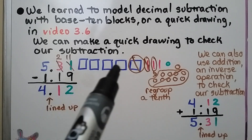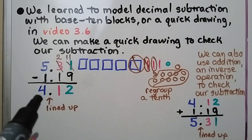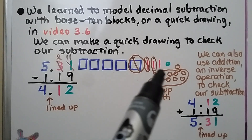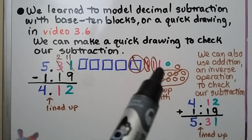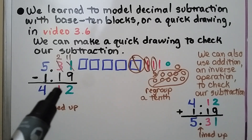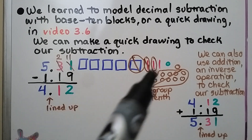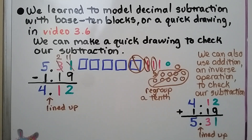And we're left with 4 squares for the 4 whole, 1 tenth over here for the 1 tenth, and 2 hundredths — which is the green one and the brown one. We can also use addition, which is an inverse operation, to check our subtraction.